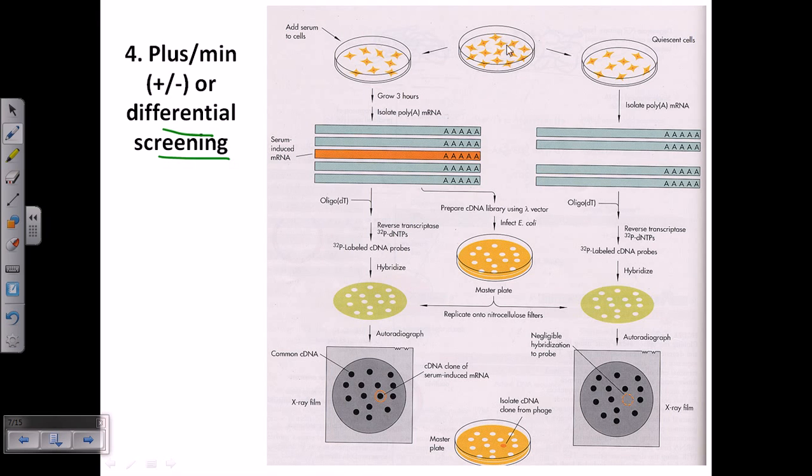For example, this is a type of cell that is growing in the normal medium. Now what is the characteristic of this cell is that when we expose these cells to the serum, then some new type of cells start to develop and the development of these new cells will be possible due to the expression of certain genes inside the cells.